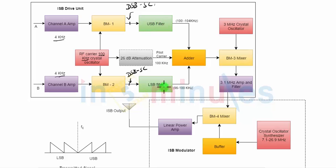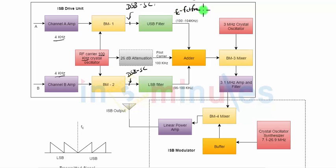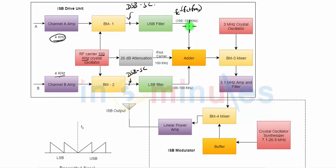After that we have a USB filter and an LSB filter. The output of the USB filter will be the upper sideband. The frequency range of the upper sideband is from FC to FC plus FM1. In this case FC is 100 kHz, and FM1 is 4 kHz — the bandwidth of the modulating signal — so the upper sideband spans from 100 kHz to 104 kHz. That is the upper sideband coming from the first channel.